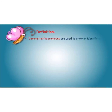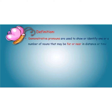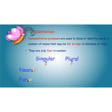Demonstrative pronouns. Let's define. Demonstrative pronouns are used to show or identify one or a number of nouns that may be far or near in distance or time. They are only four in number. They may be singular or plural, near or far.